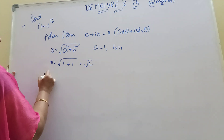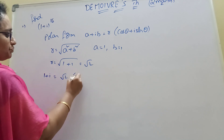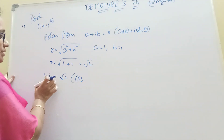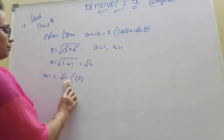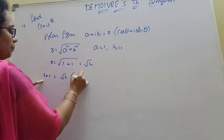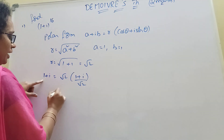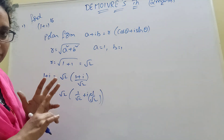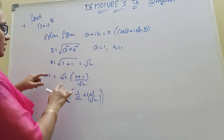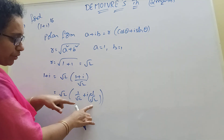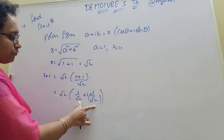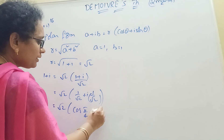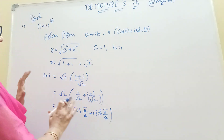Very good. R equal to root 2. Now, 1 + i equal to root 2 into (cos theta + i sine theta). Divide through by root 2: 1/root 2 + i times 1/root 2. That gives us 1 + i = root 2 times (cos pi/4 + i sine pi/4).